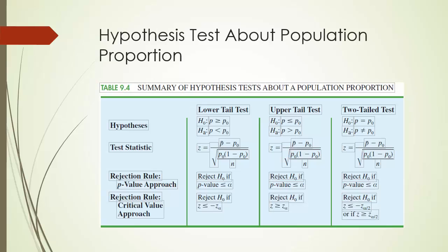Hypothesis test about a population proportion is much easier than its counterpart of testing a population mean. Similarly, we have lower-tailed, upper-tailed, and two-tailed tests, and the rejection rules are also the same. Just remember, we have a specific formula for computing standard error when we are dealing with proportions. We don't have to worry about t-distributions here. Instead, as long as sample size is sufficiently large, we can use normal distribution.